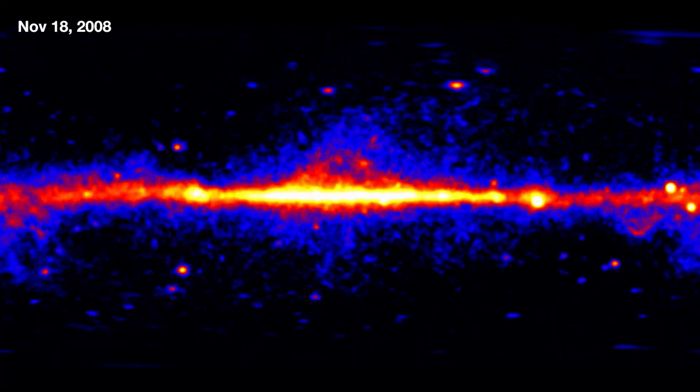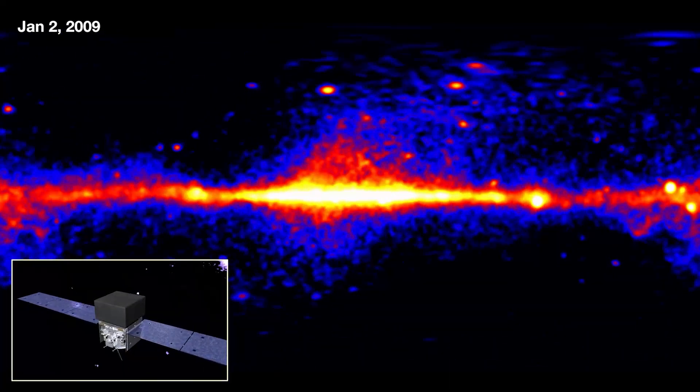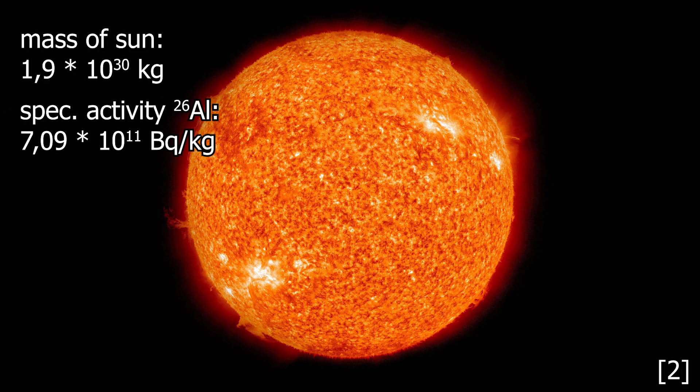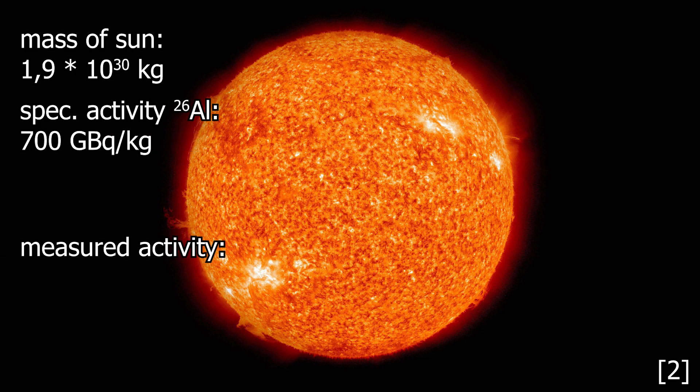What does the sun weigh? Ah, it's 1.9 times 10 to the power of 30 kilograms, with the specific activity of aluminium-26 being 7.09 times 10 to the power of 11 becquerels per kilogram, so 700 gigabecquerels per kilogram, times 2 times 10 to the power of 30 kilograms, 1.4 times 10 to the power of 33 gigabecquerels of aluminium-26. So it's terabecquerels, petabecquerels, exabecquerels, zeta, yotta, rona, quetta, and then we run out of prefixes because these are orders of magnitude that no longer make sense to clarify because, well, you can't imagine them at all.